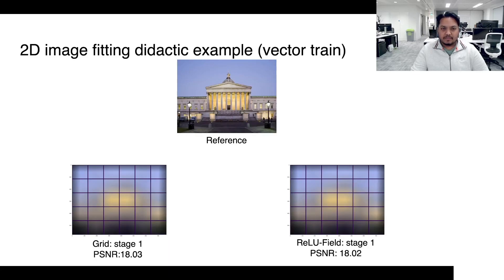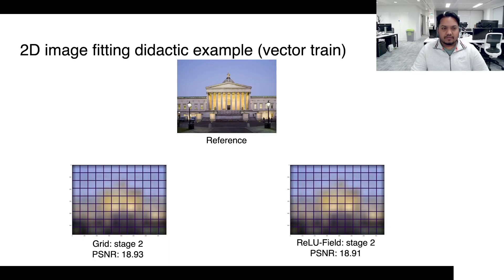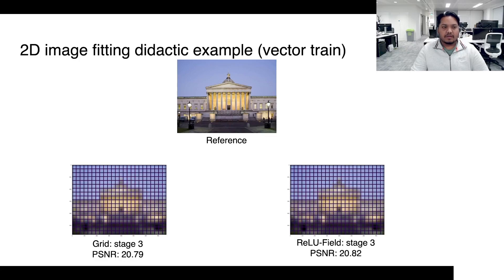However, the same results are not observed when working with natural images, which mostly contain smooth transitions. Hence, we restrict the use of ReLU field grids only to model the density and not the spherical harmonics coefficients. To demonstrate the utility and feasibility of our proposed change, we put the method to test through the following applications.